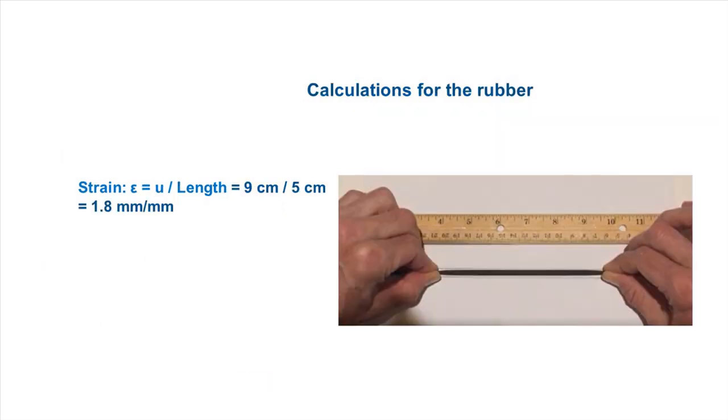Starting from an initial length of 5 cm, we elongated the rubber cylinder by 14 cm. This creates a strain of 1.8. Strain is a dimensionless quantity, but it is usually expressed as inch per inch or millimeter per millimeter.